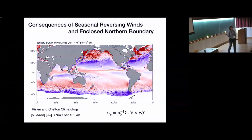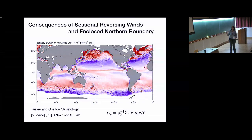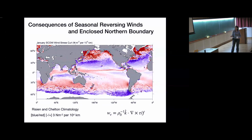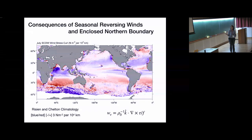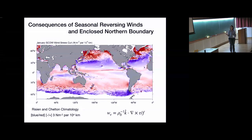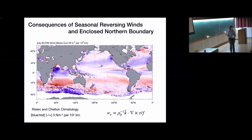This is the curl of the wind stress from a climatology of scatterometer winds by Craig Risien and Dudley Chelton. These data are available online. Jumping back and forth between January and July, you can see that in most equatorial regions the sign of the curl stays the same. The exception is the Bay of Bengal, where it changes sign because the winds have changed direction — not really surprising given the monsoon reversal.